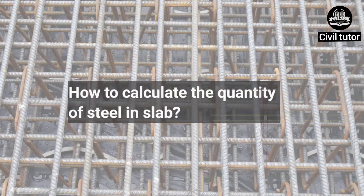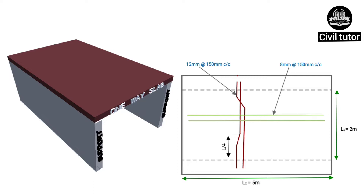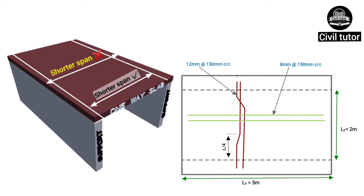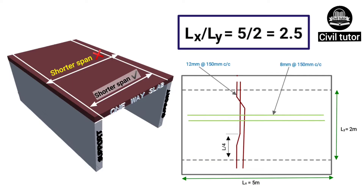Let's start with today's topic. Suppose we need to calculate the quantity of steel for a slab of length 5m and width 2m. It should be noted that the shorter span of the slab should not be confused with the beam outer-to-outer span. For reference, I have drawn a diagram to give a clear idea about it. Lx is the longer span and Ly the shorter span. The ratio of longer span to shorter span, Lx upon Ly, is equal to 5 upon 2 = 2.5, which clearly indicates that this slab is a one-way slab.